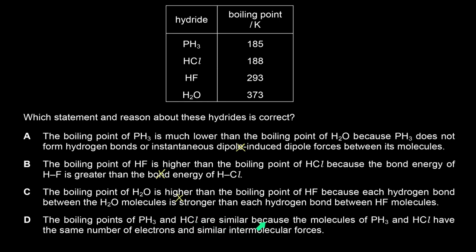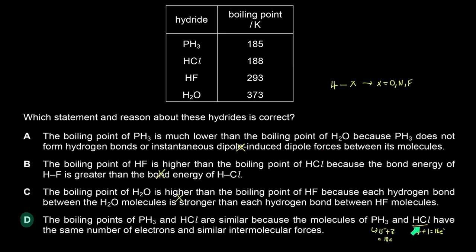Statement D says the boiling points of PH₃ and HCl are similar because they have the same number of electrons and similar intermolecular forces. PH₃ has 15 + 3 = 18 electrons, and HCl has 17 + 1 = 18 electrons. They're both polar molecules with van der Waals instantaneous dipole-induced dipole and permanent dipole-permanent dipole interactions. Neither shows hydrogen bonding, since hydrogen must be bonded to O, N, or F. The answer is D.